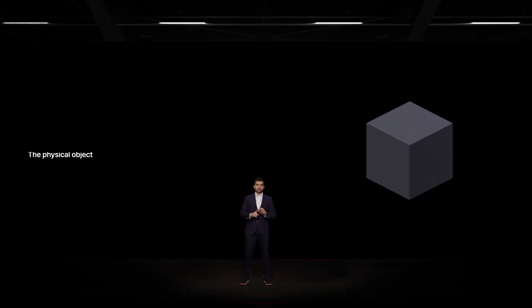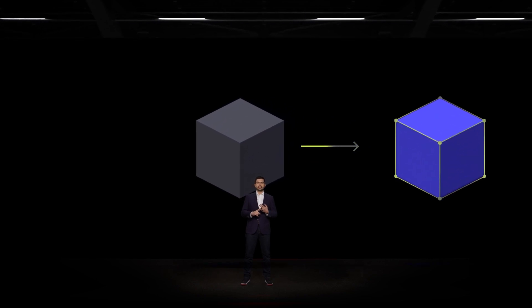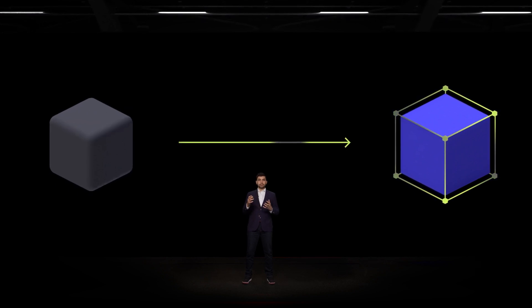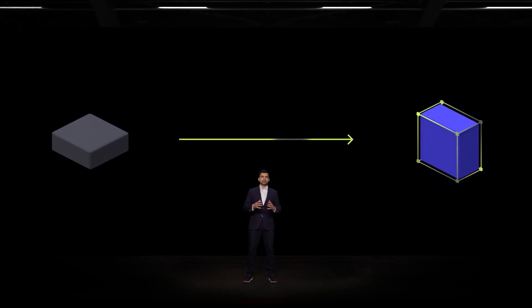There are three core elements to a truly effective digital twin platform: the physical object, a virtual representation of it, and most importantly, a real-time data exchange between these two. So any changes in the real object are automatically reflected and updated on the digital version.